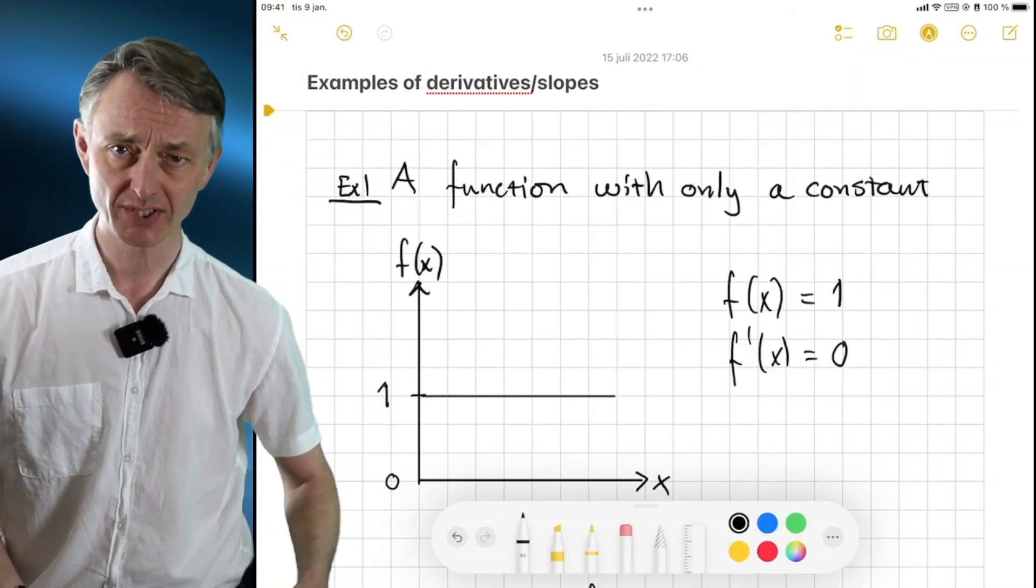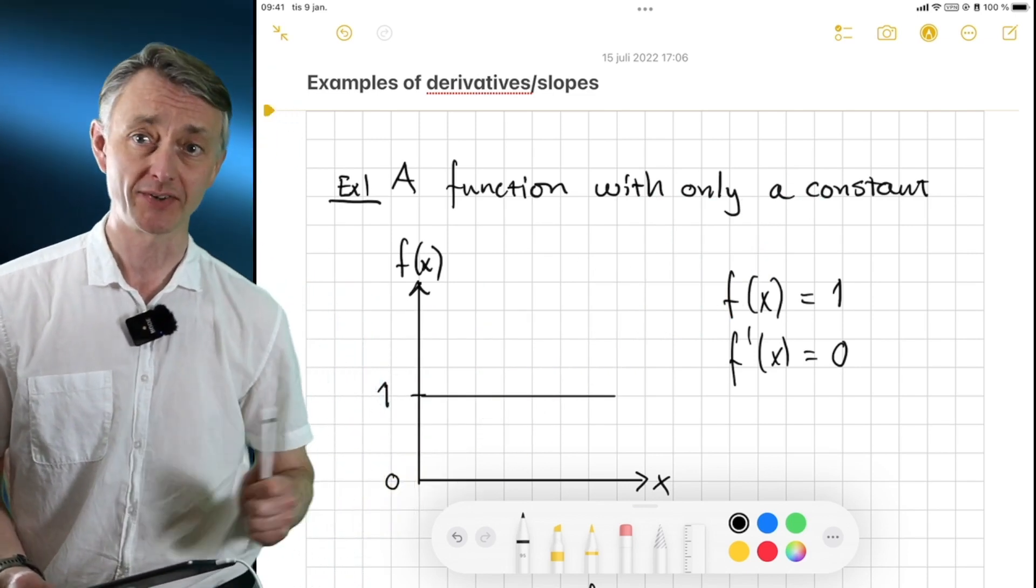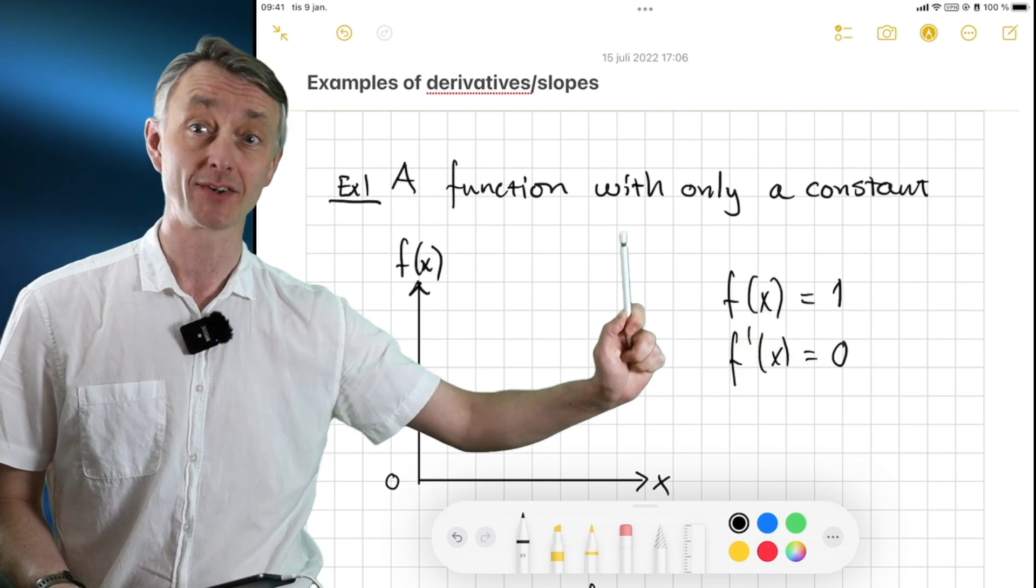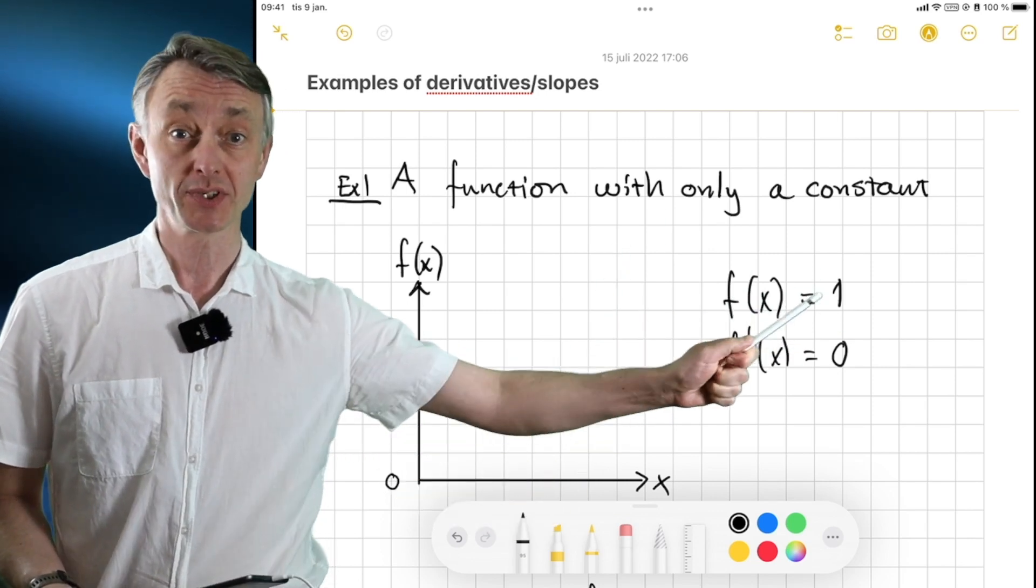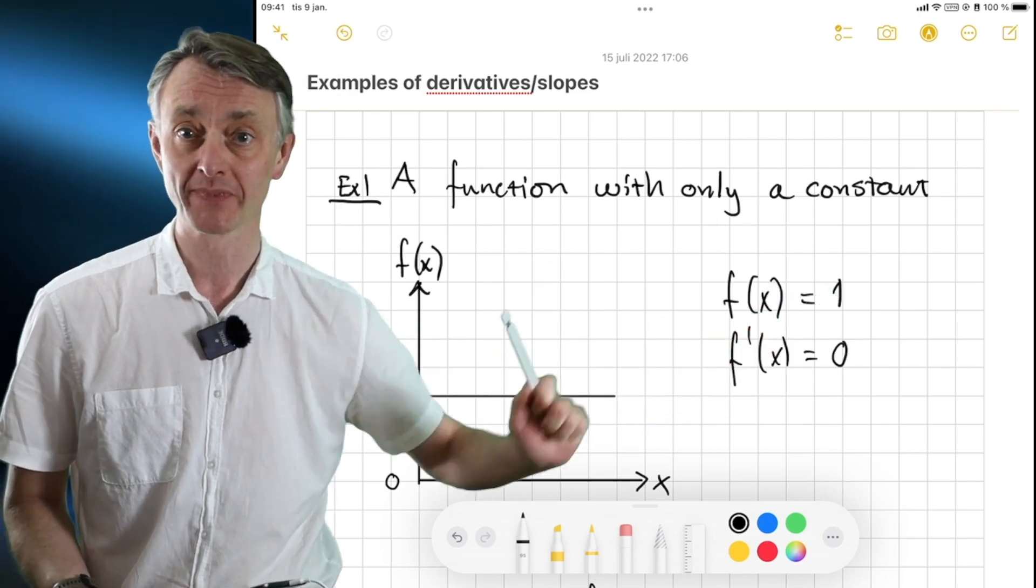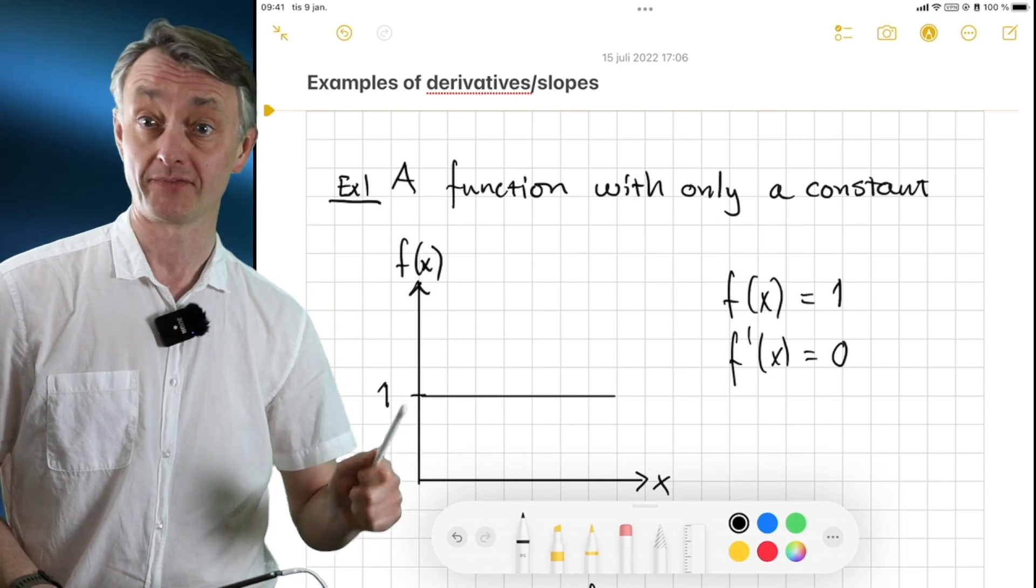The first example I would like to show you is a function with only a constant. A very simple one is simply f of x equals 1. So 1 is here a constant. We can see that f of x is in fact not a function of x at all. And here I have drawn it. So this is f of x here, the value of the function.